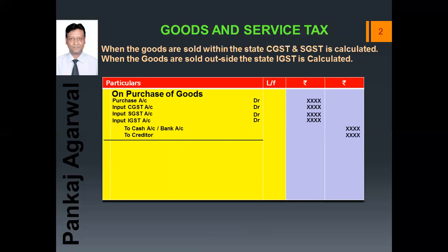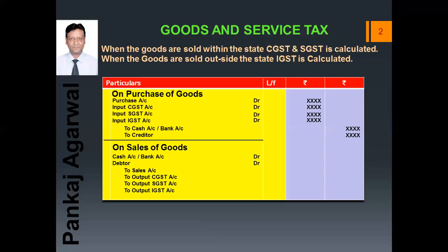So on the sales of goods we will do: Cash Account debit, Bank Account debit, or Debtors Account debit, to Sales, to Output CGST, to Output SGST, or to Output IGST. If the goods are sold within the state, Output CGST and Output SGST will be used. If the goods are sold outside the state, Output IGST will be used.